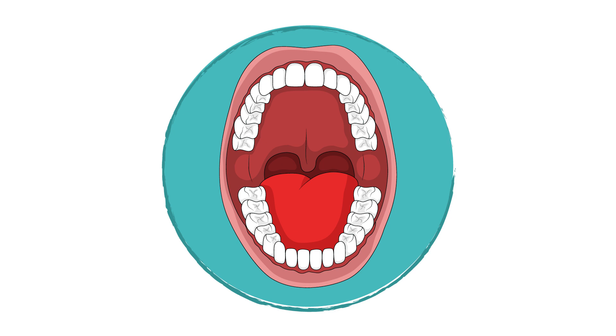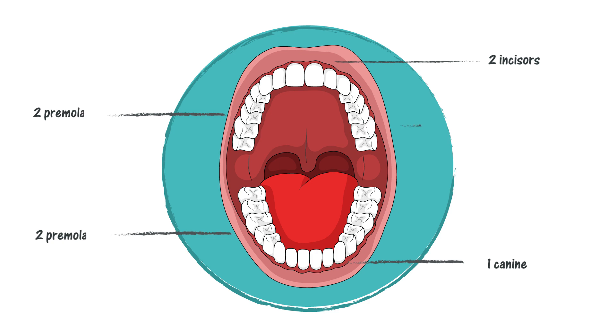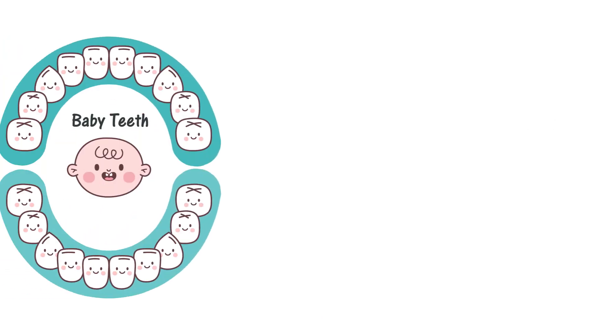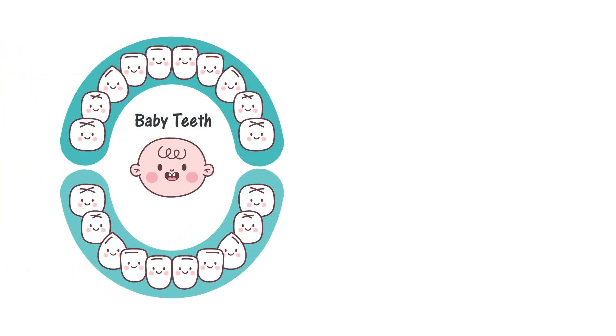In each quadrant, which is equal to a quarter of the mouth, there are two incisors, one canine, two premolars, and three molars.